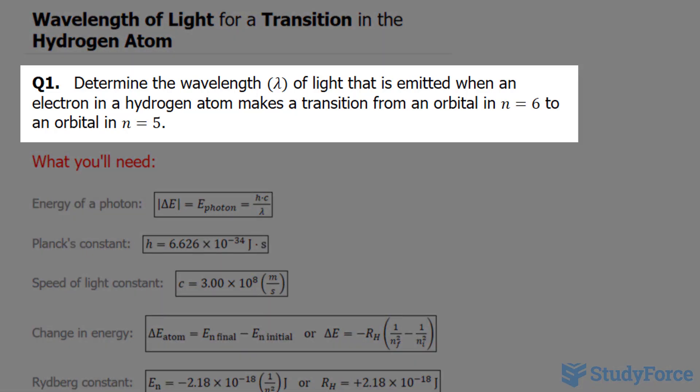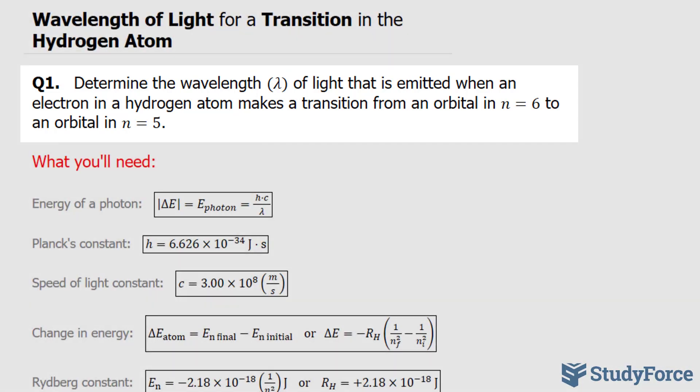The question reads, determine the wavelength lambda of light that is emitted when an electron in a hydrogen atom makes a transition from an orbital in n equals 6 to an orbital in n equals 5.